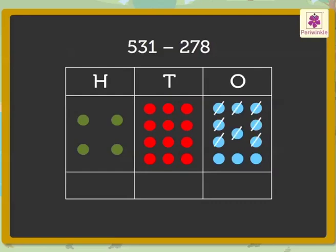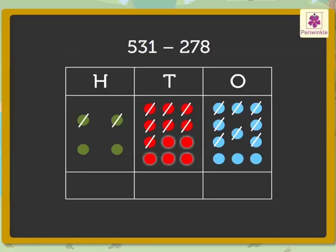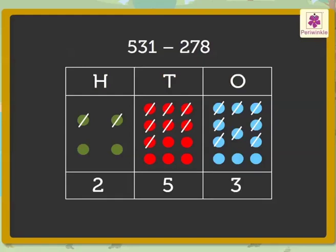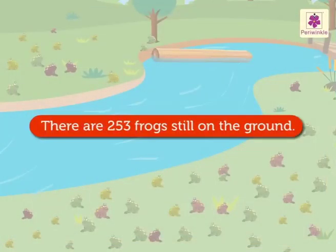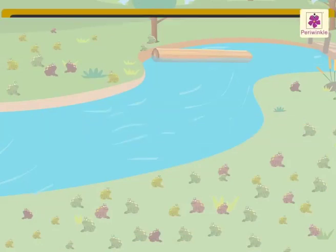So now we represent 531 with dots like this. Now let us cancel eight blue dots, seven red dots, and two green dots. We are left with three blue dots, five red dots, and two green dots. So we get in all two hundreds, five tens, and three ones, which is equal to 253. There are 253 frogs still on the ground.